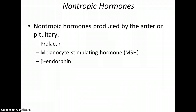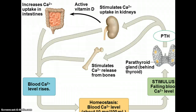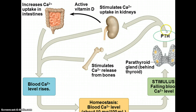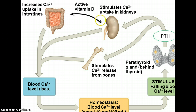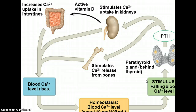Non-tropic hormones are simply released and cause some cell to do something. For example, the parathyroid gland releases parathyroid hormone, which, if you're low on blood calcium, stimulates the release of calcium from your bones and also stimulates the kidneys to retain more calcium from what's flowing through your system and from the foods you eat. A good example of a non-tropic hormone involved with homeostasis.